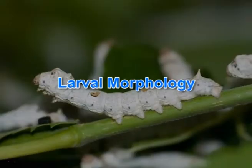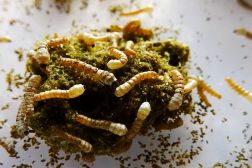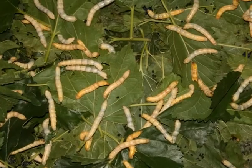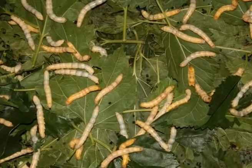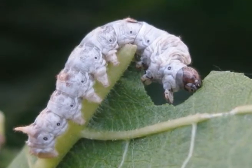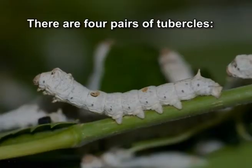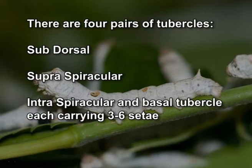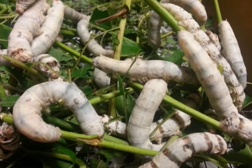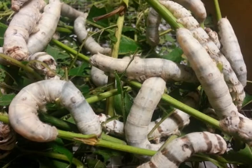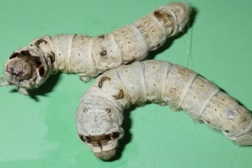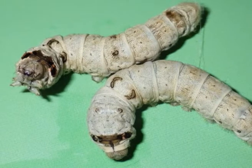Now we will see larval morphology. The newly hatched larva is black or dark brown in color, measuring about 3 mm in length. It is commonly called ant or keigo in Japanese. The head is large and the body is densely covered with bristles. There are 4 pairs of tubercles — subdorsal, supraspiracular, intraspiracular and basal tubercle — each carrying 3 to 6 setae. As the larva grows through molts into later instars, the body becomes smooth and light in color, due to rapid stretching of the cuticular skin. The body has 3 divisions: head, thorax and abdomen.